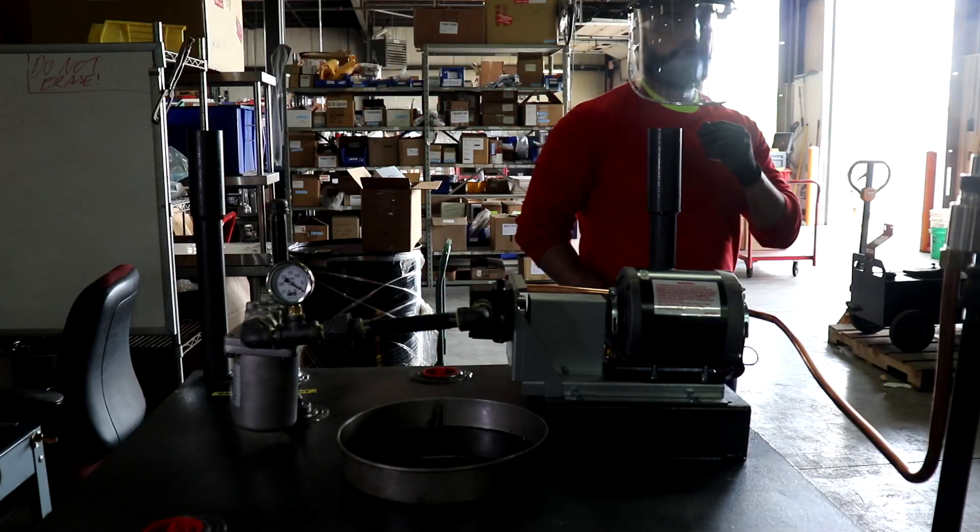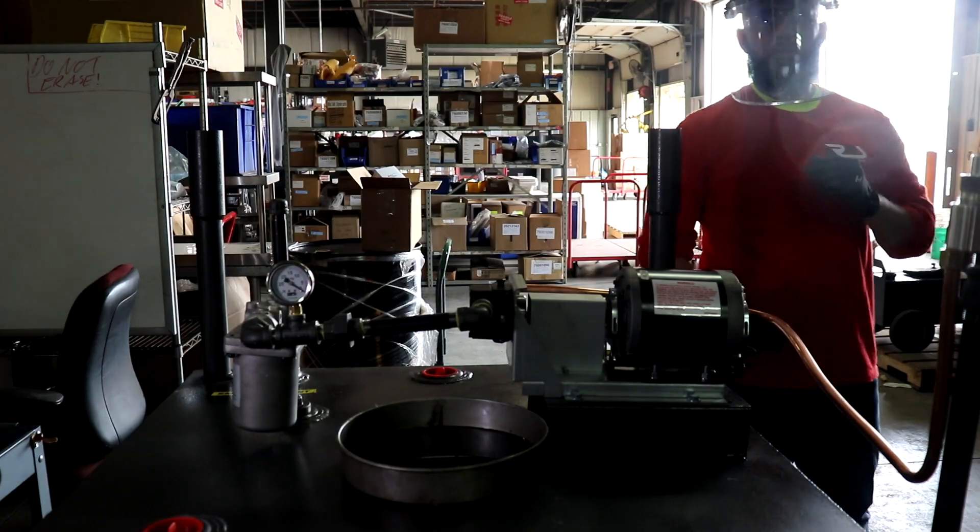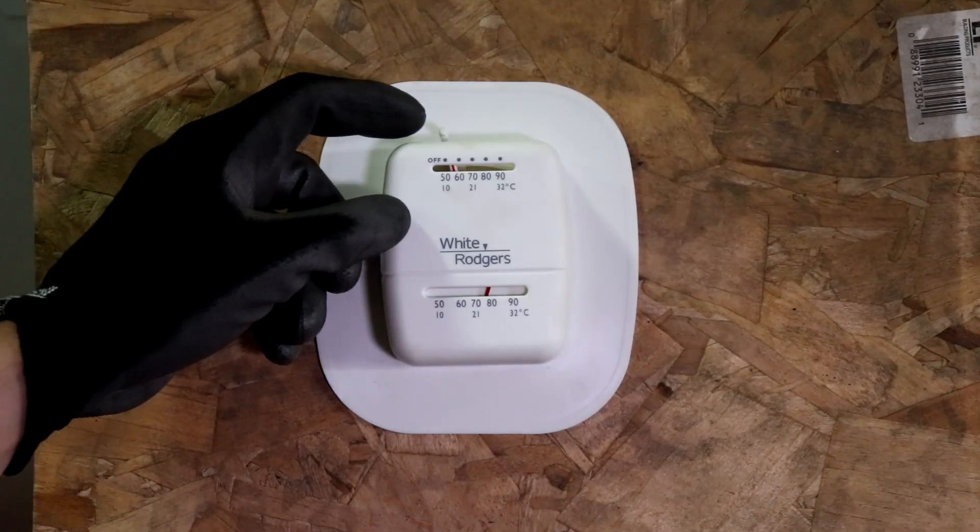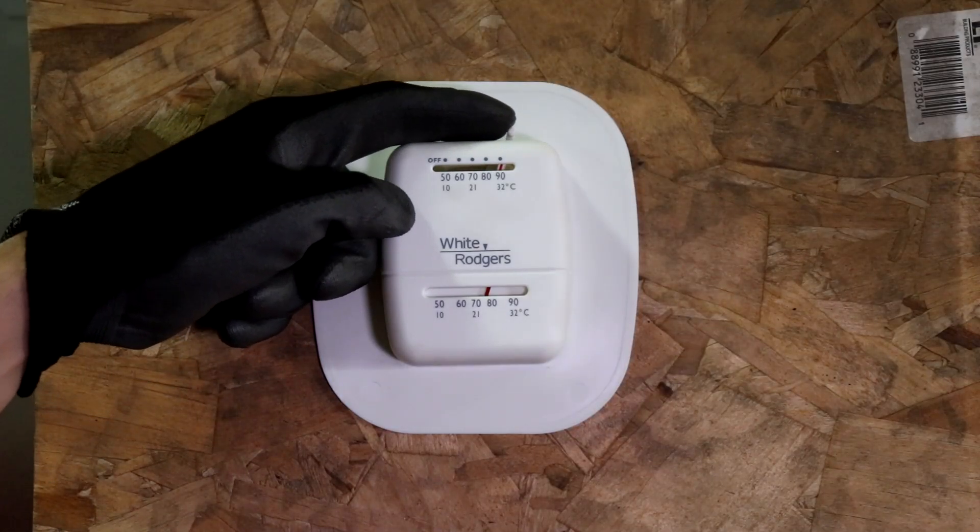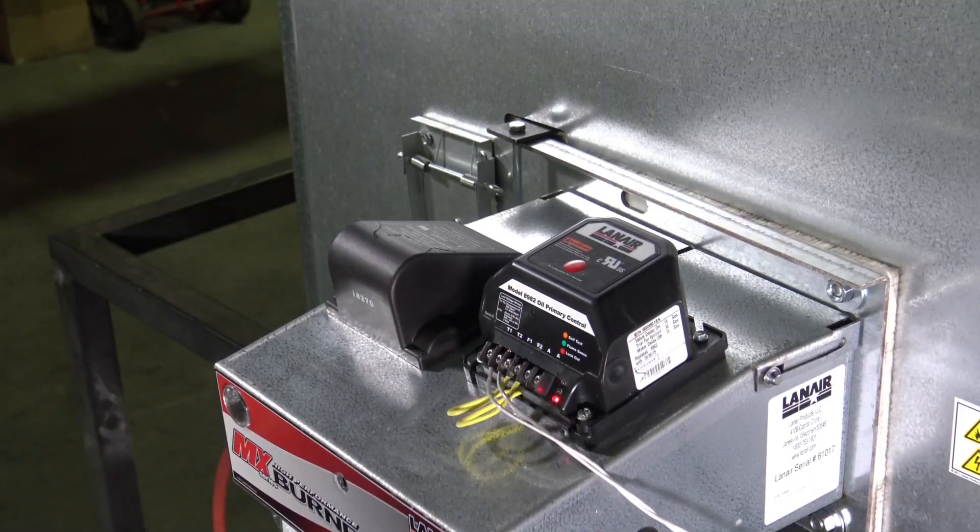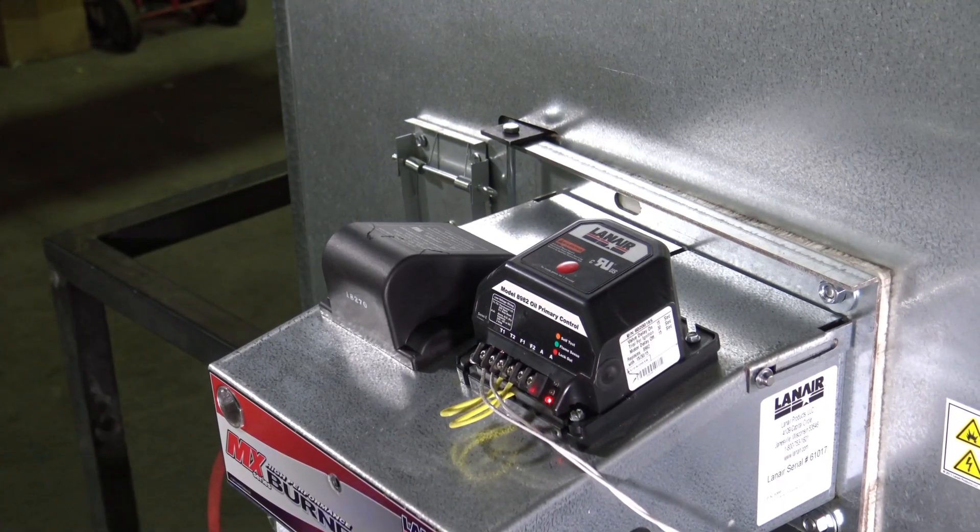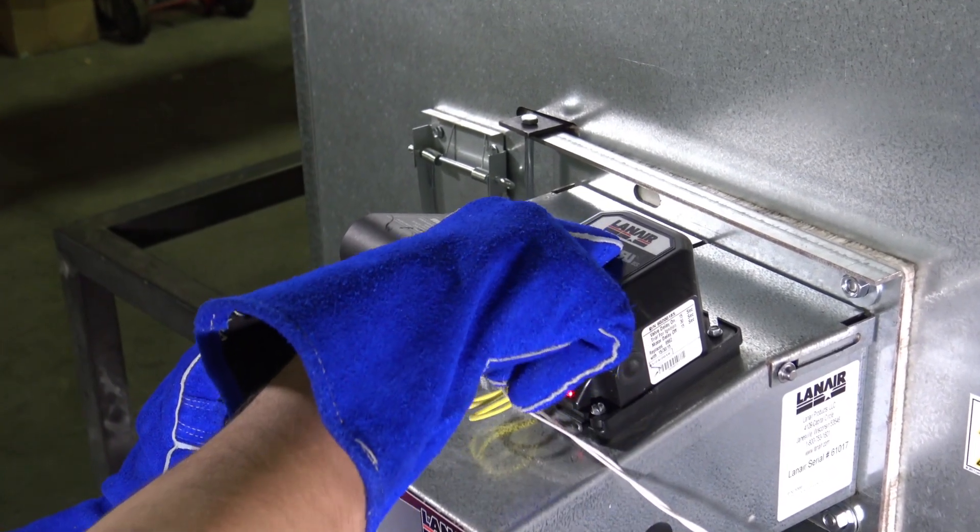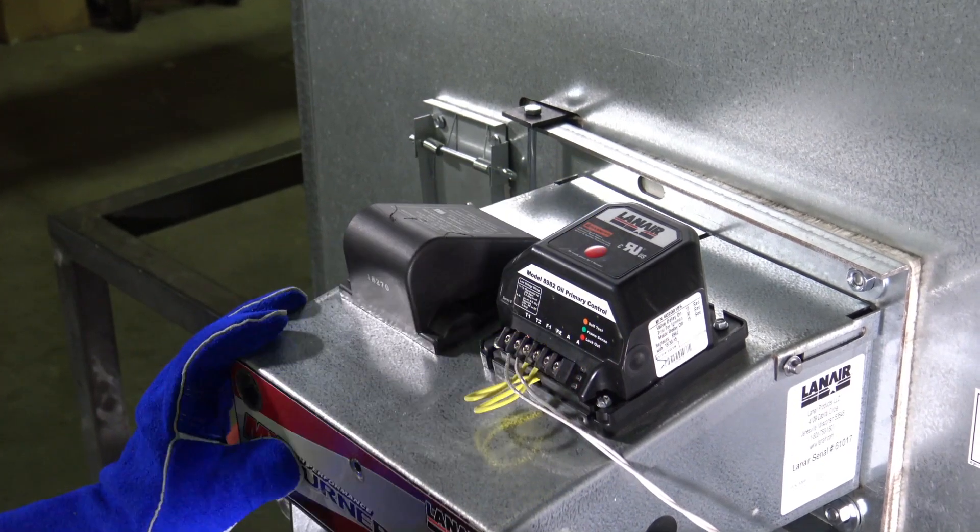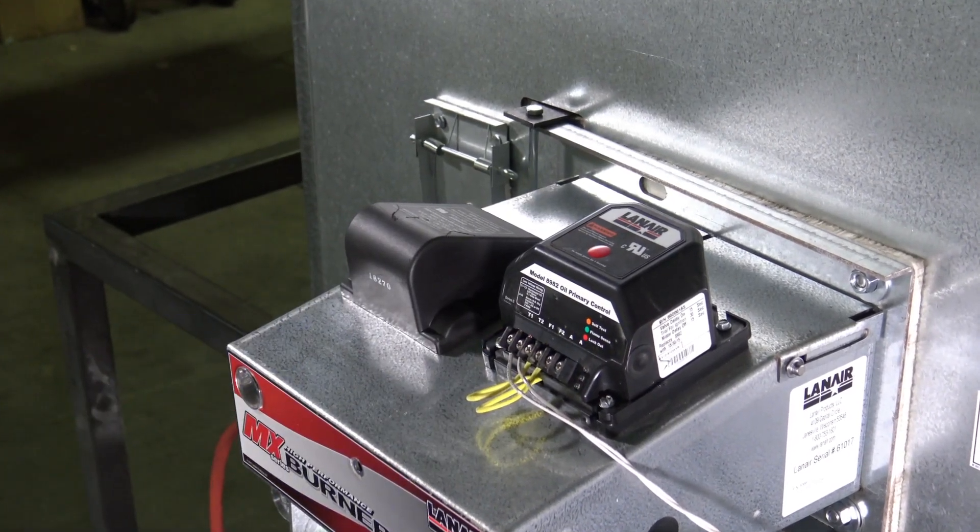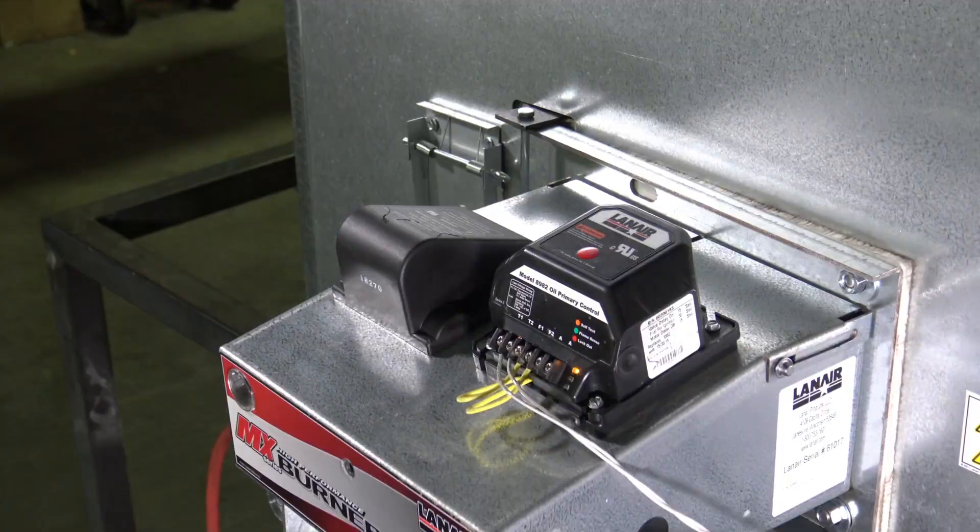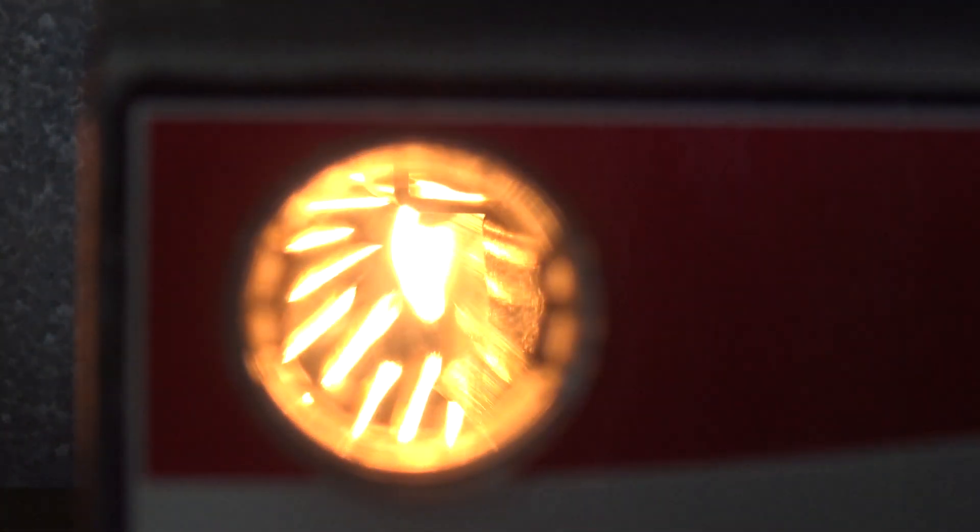Once proper fuel quality and storage can be confirmed, continue with the flame adjustment. Establish a call for heat to the unit by setting the thermostat to its maximum temperature setting. If the red light on the burner's primary control is indicating that the unit is locked out, you will need to press the reset button on the top of the primary control to reset the burner. The unit should now attempt to start operating. Allow the heater to run for at least 15 minutes to reach its operating temperature before proceeding.